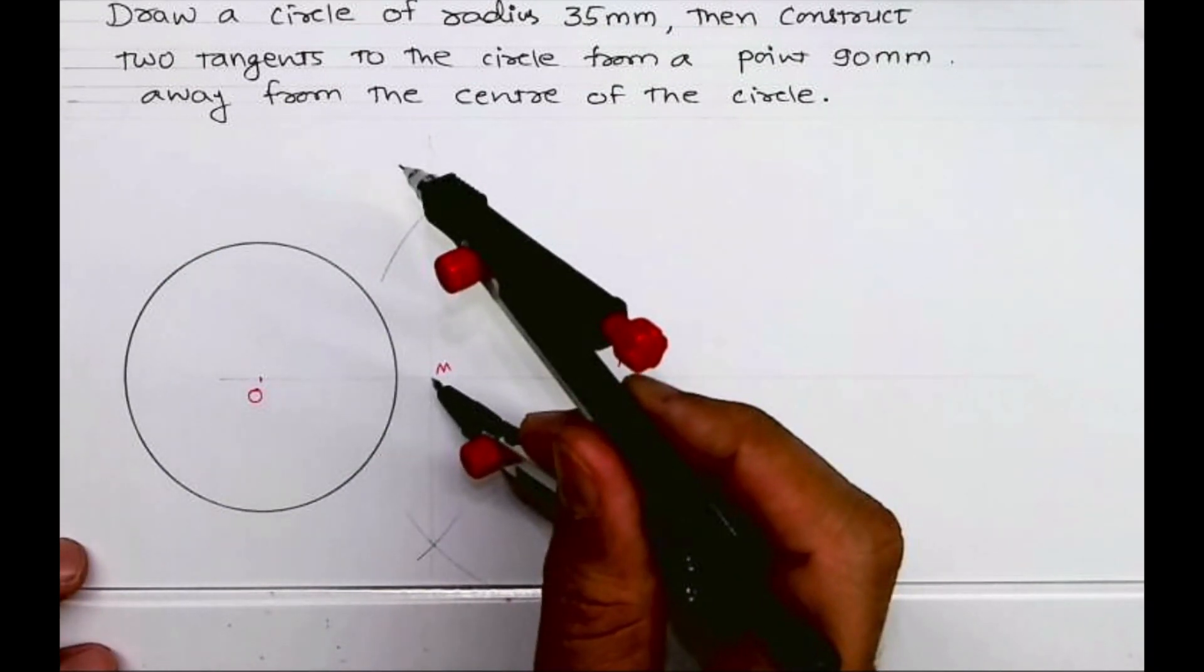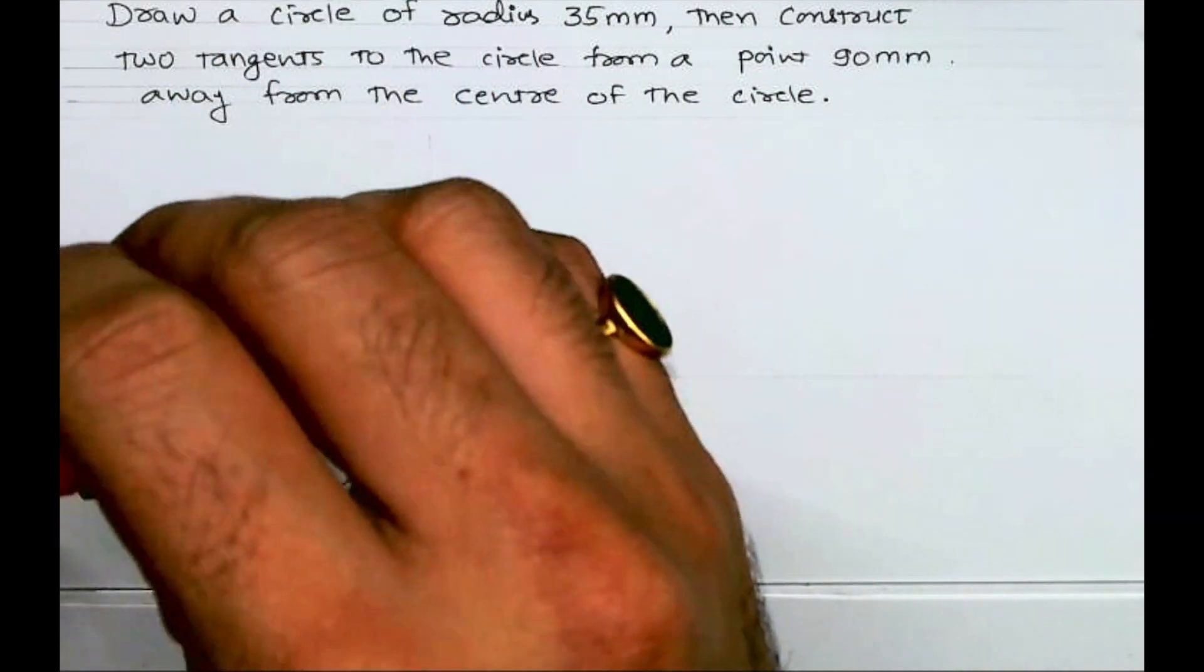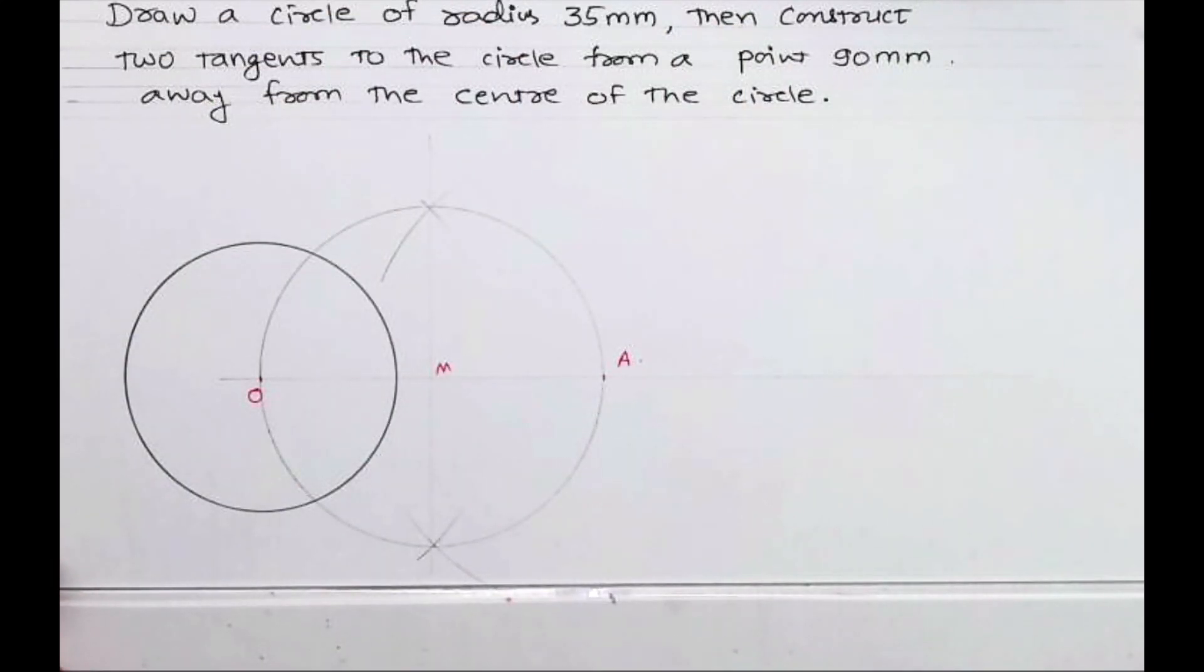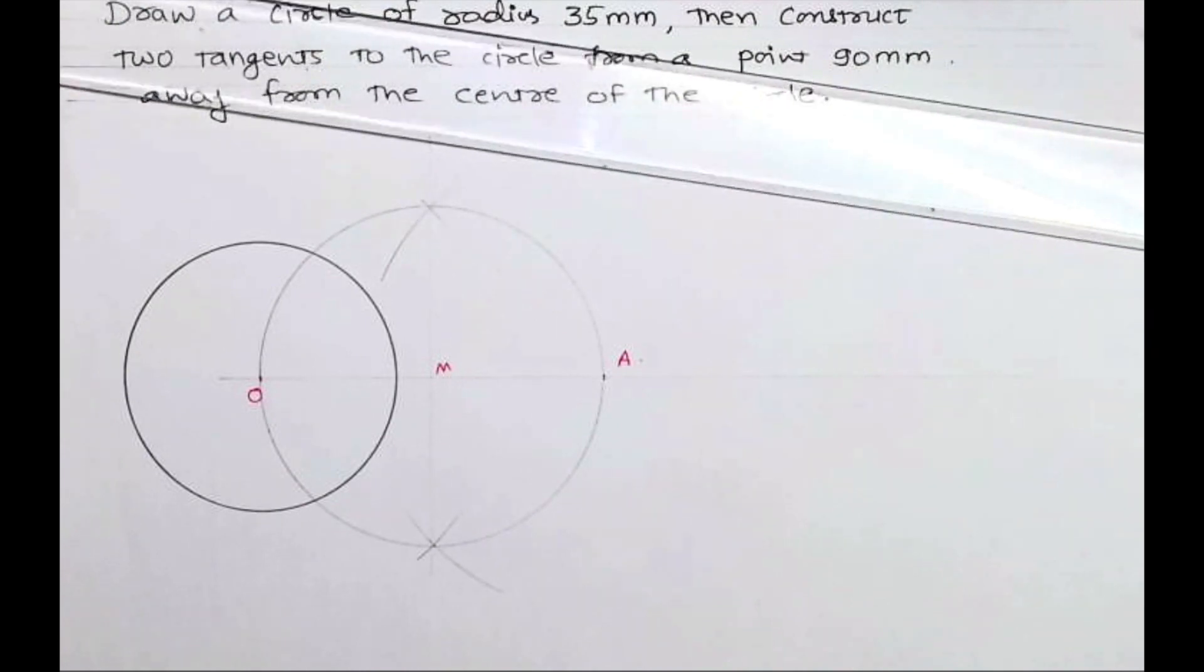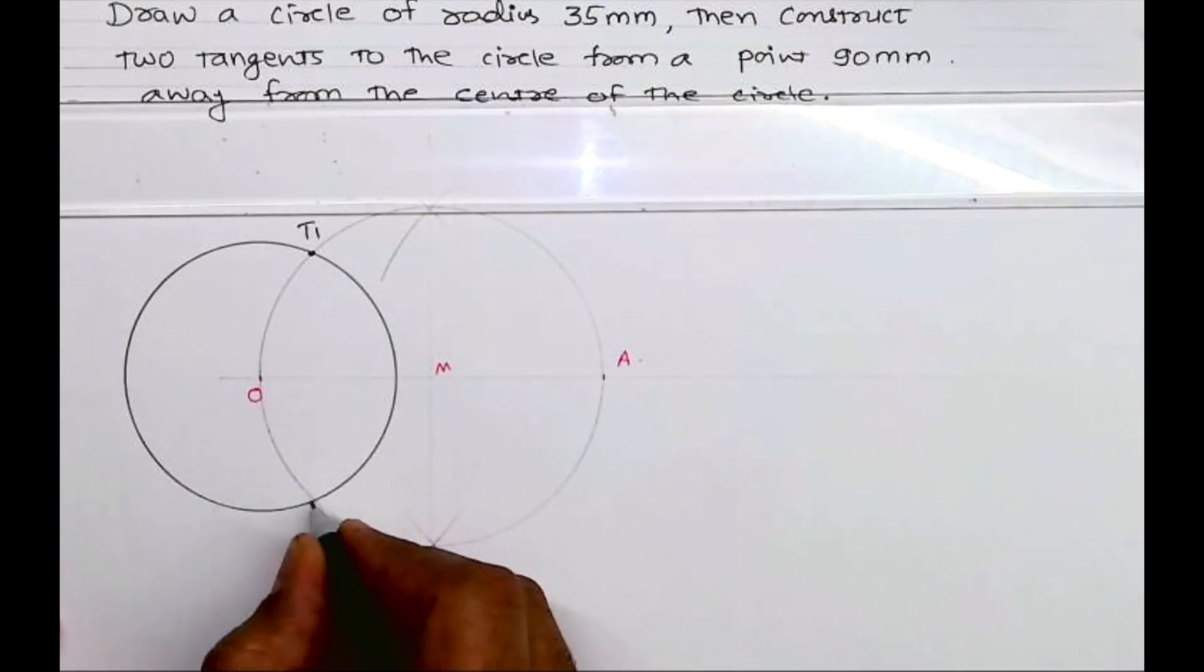Take radius from M to O and draw a circle. Now wherever this circle is touching the main circle, that is point T1 and T2.